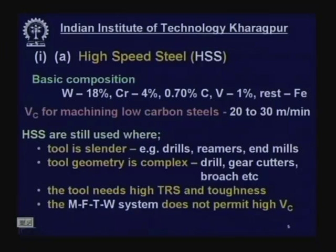High speed steel is so named because when it was introduced, it could machine mild steel at the highest speed of up to 30 meters per minute. In 1905, this was the highest achievable speed — that is why it is called high speed steel. But presently, among all cutting tool materials, high speed steel offers possibly the lowest cutting speed.